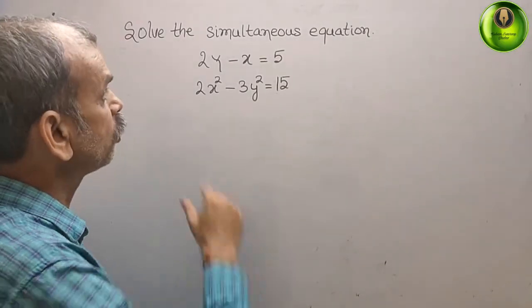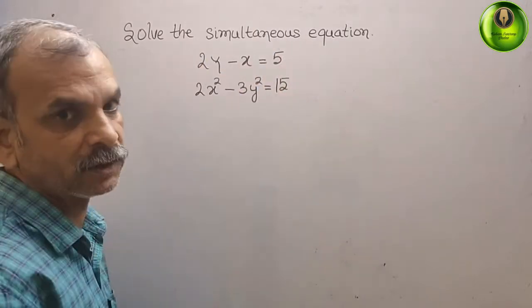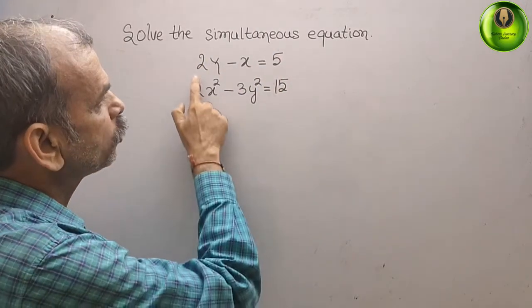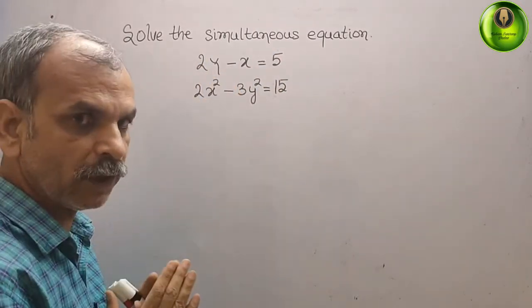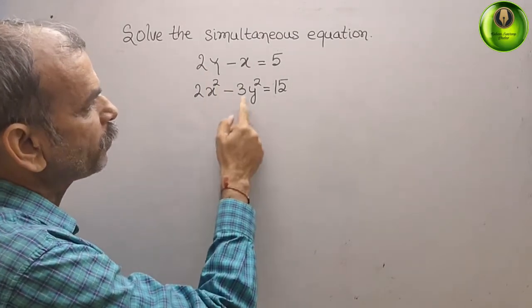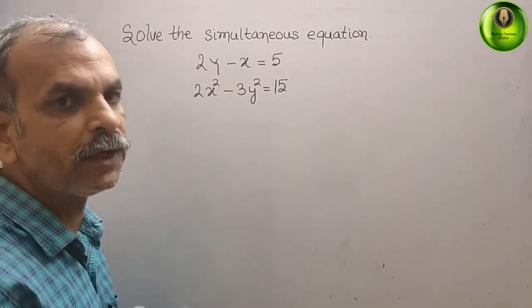Solve the simultaneous equations: 2y minus x is equal to 5, and 2x squared minus 3y squared is equal to 15.